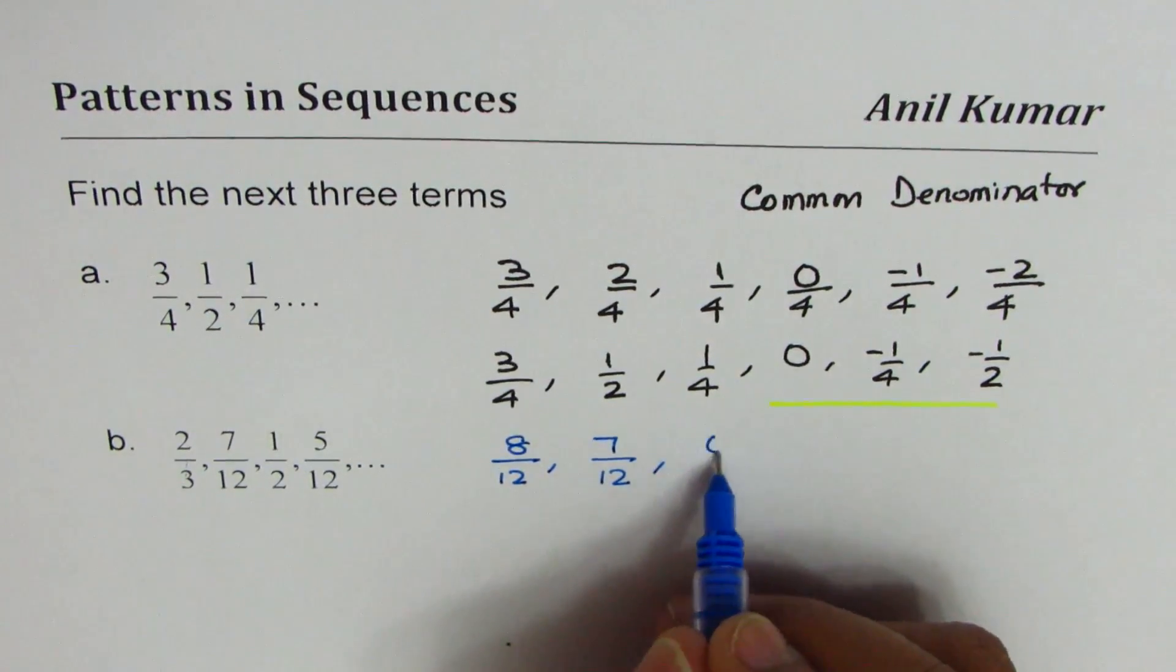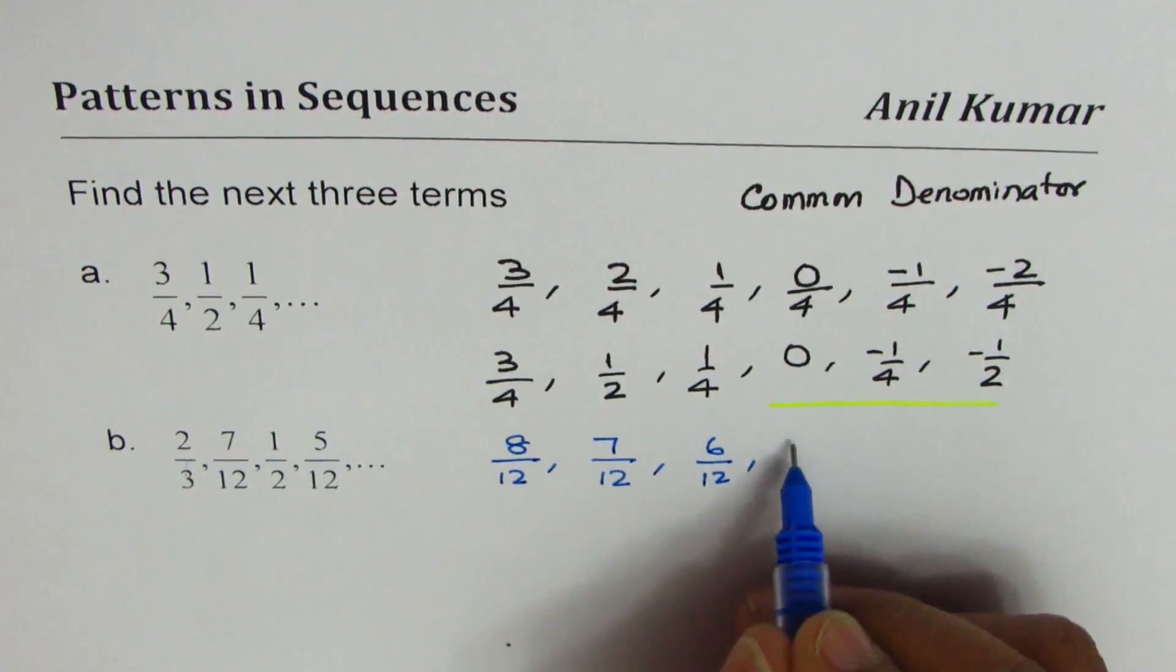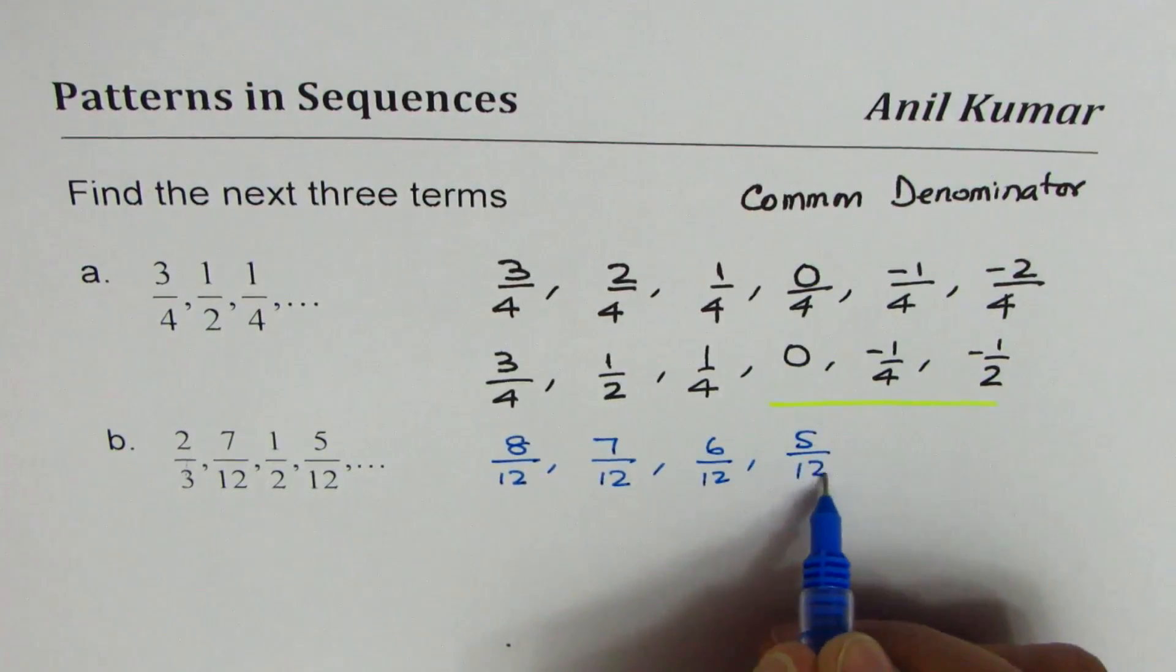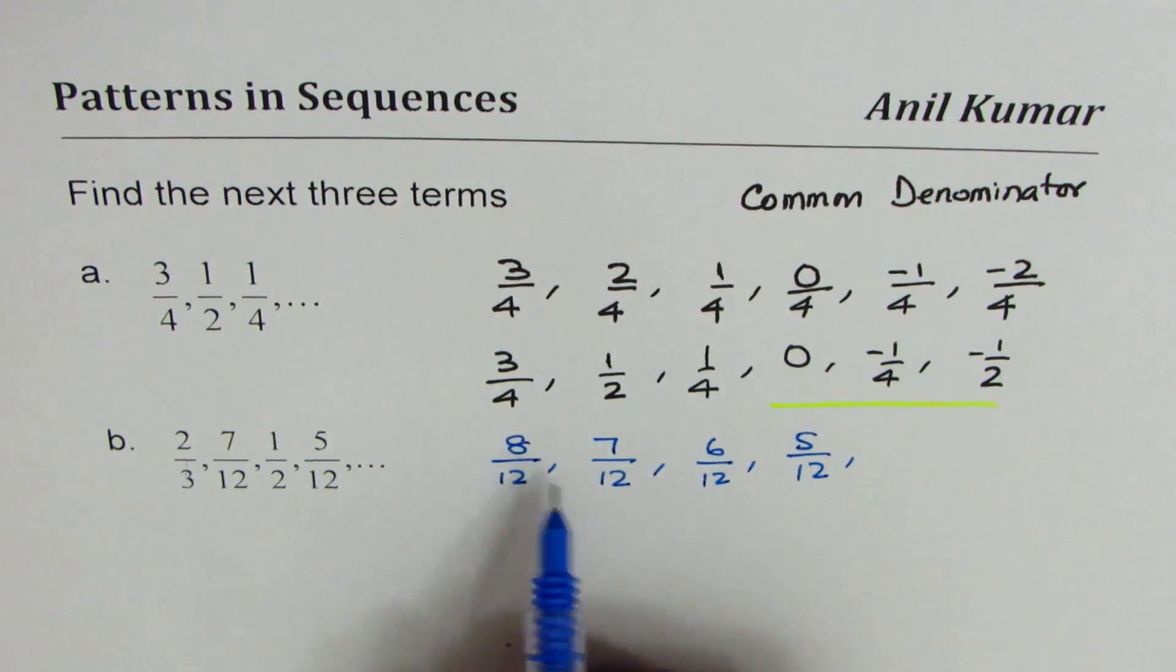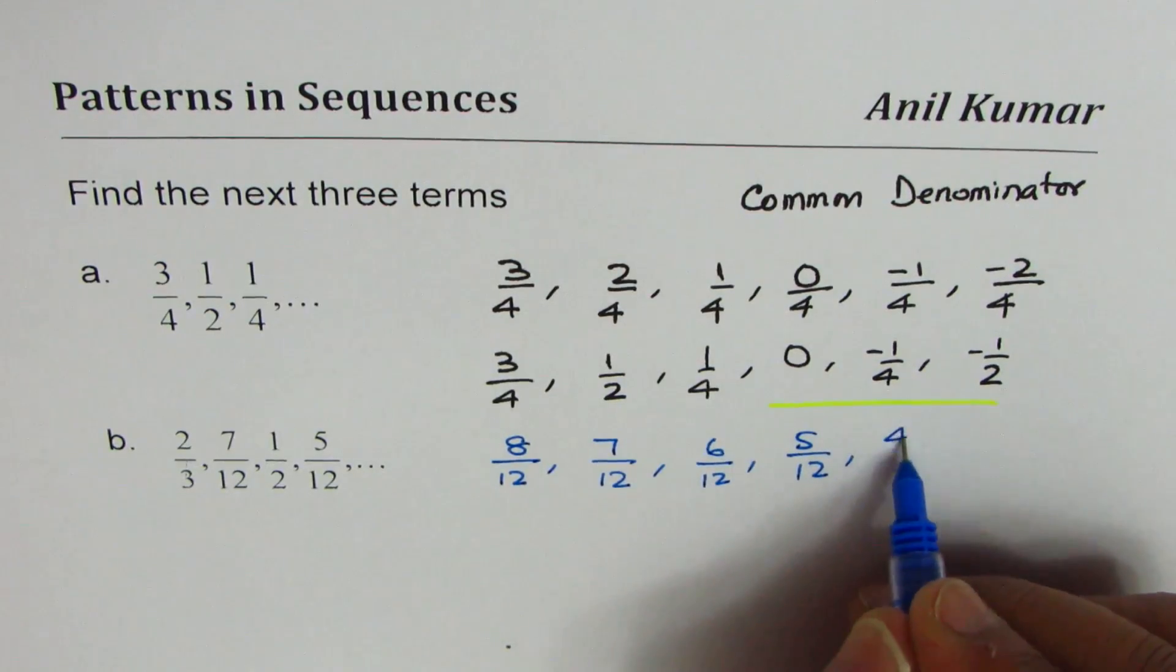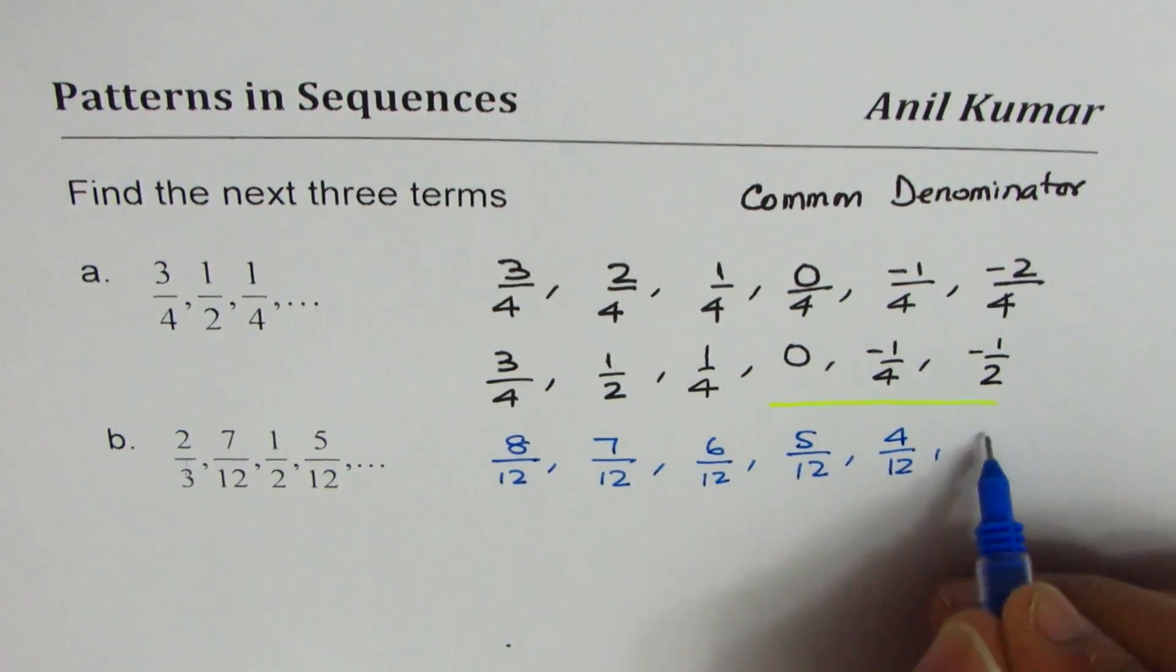6 times 2 is 12, so this is 6/12. We're given 5/12. Now it's easy to see the pattern: 8, 7, 6, 5, then 4/12, 3/12, and 2/12.